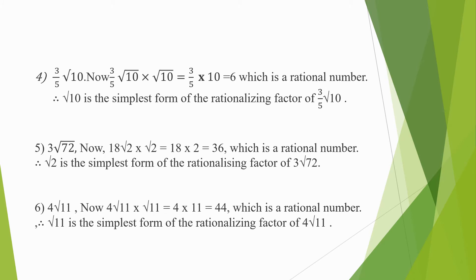Fourth question: 3 by 5√10. We cannot factorize √10. Therefore we will multiply with √10. So when we multiply with √10, we get 3 upon 5 multiplied to 10. So 5 and 10 can be cancelled. We get 3 multiplied to 2, that is equal to 6, which is a rational number. Therefore √10 is the simplest form of the rationalizing factor of 3 by 5√10.